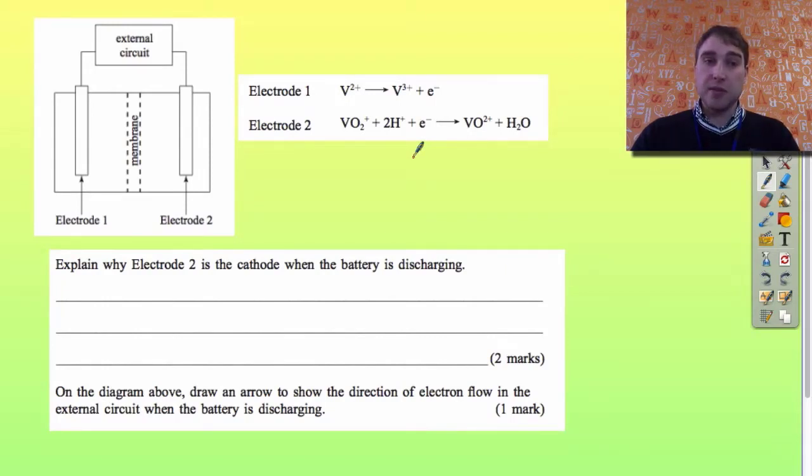So when I'm answering the question here, explain why electrode 2 is the cathode: Reduction is occurring at electrode 2, and the site of reduction is the cathode in a battery when it is discharging. That's how I would sum up the answer to that question.